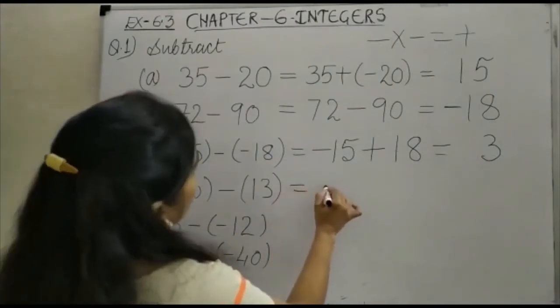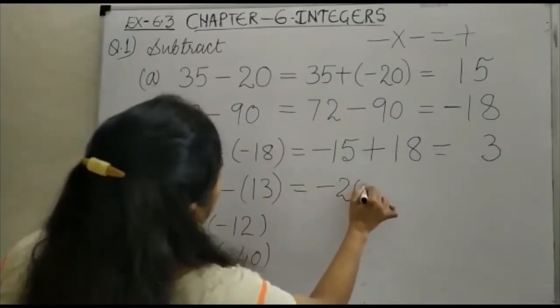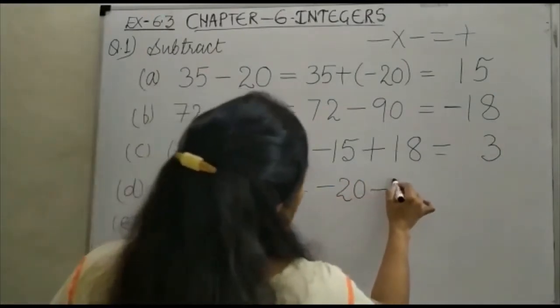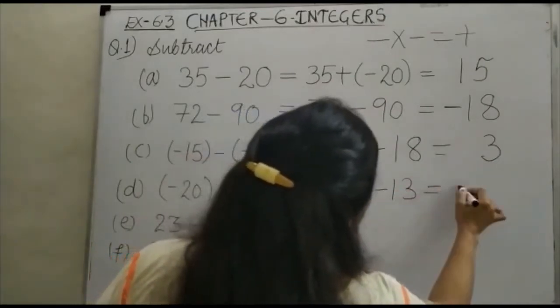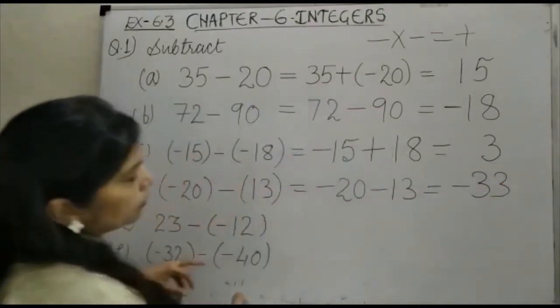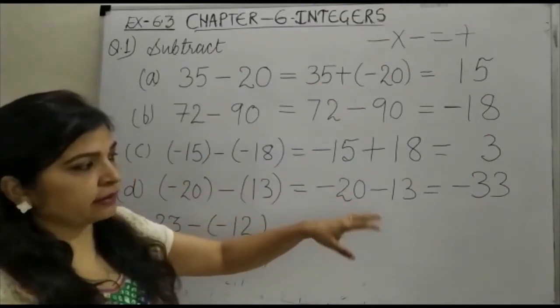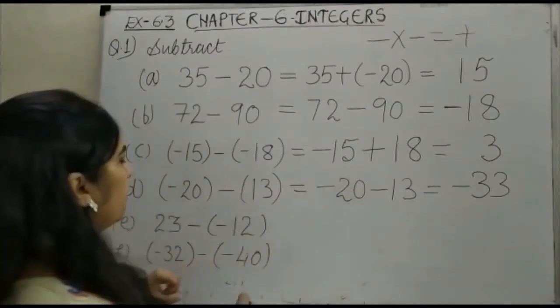Next, minus 20 minus 13. So this will be minus 33 because you know minus minus is added and we give the sign of minus.